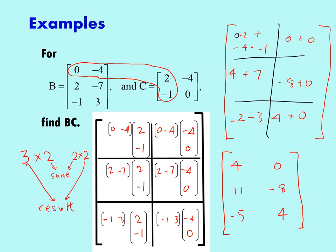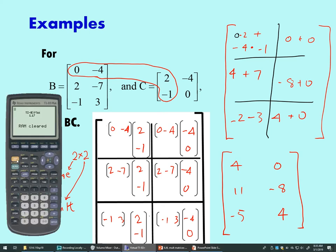Now what I'm going to attempt here is a calculator check. We have to define our matrices. We have to go into the matrix menu: second X inverse. We'll just use the same letters B and C. So we'll edit matrix B. Enter. B is a 3 by 2 matrix. We have to tell the calculator that: 3 by 2. We input all of the entries as you would think. This goes row by row. So 0, negative 4, 2, negative 7, negative 1, and 3. So that's matrix B defined.